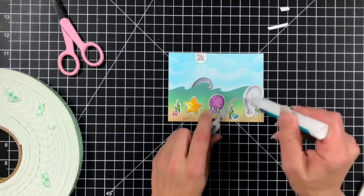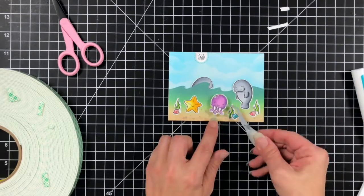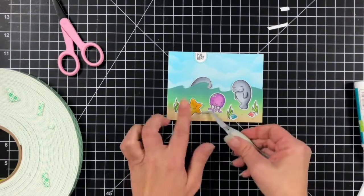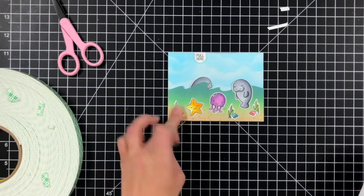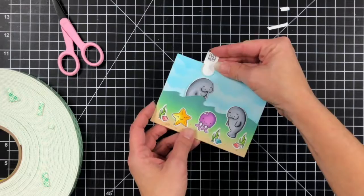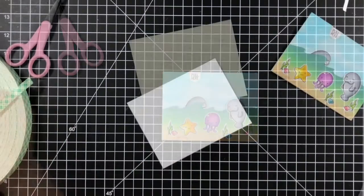So then now I'm just taking the liquid glue and adding that to the back of all the critters. Just creating this really great ocean scene. I love how that sand and that twisted citron blended together. It just is seamless.